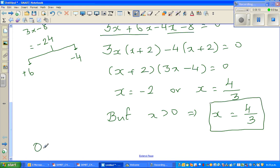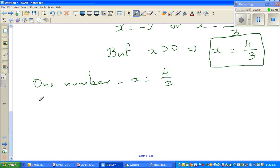So one number is x, which is 4/3, and the other number is 4 minus x, which is 4 minus 4/3. This is 12/3 minus 4/3, so the other number is 8/3.